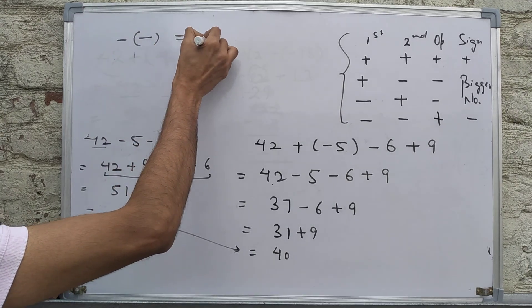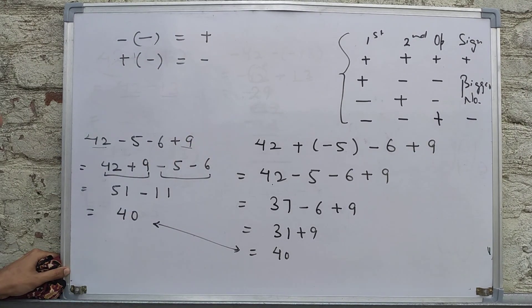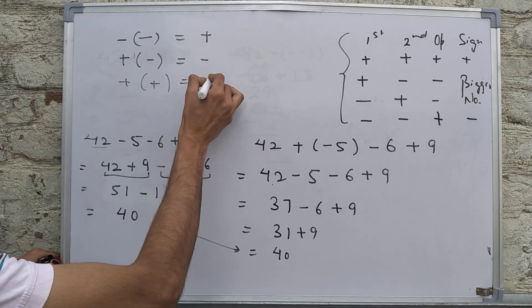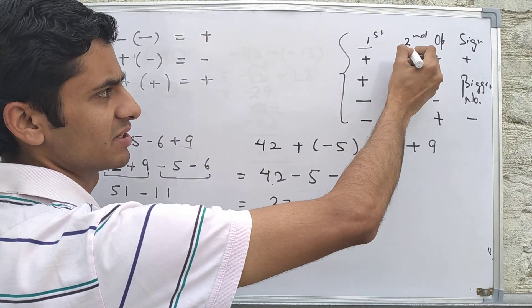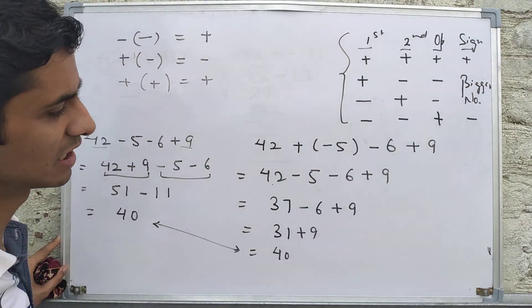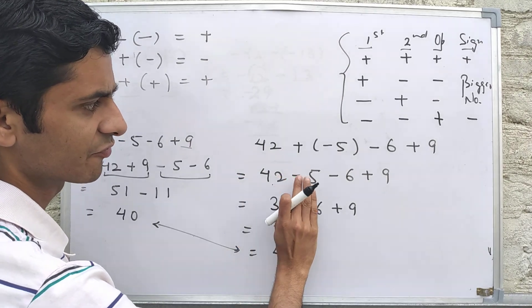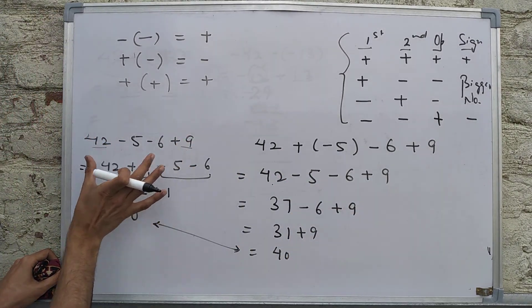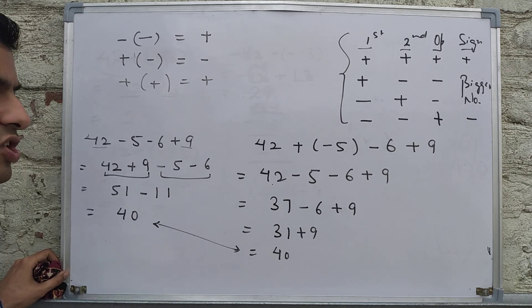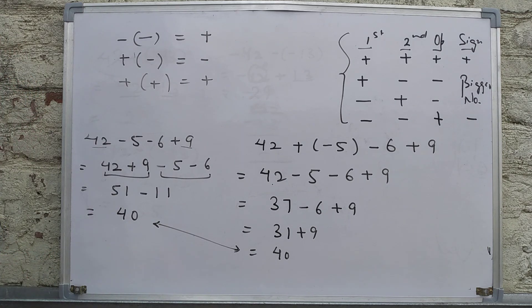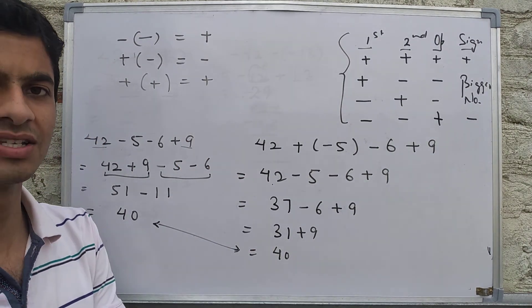To summarize the bracket rules: negative times negative becomes positive, positive times negative becomes negative, and positive times positive stays positive. Use the table — first number, second number, operation, and sign — to determine your result. You can go step by step from left, or combine positives and negatives separately and then get the final result.